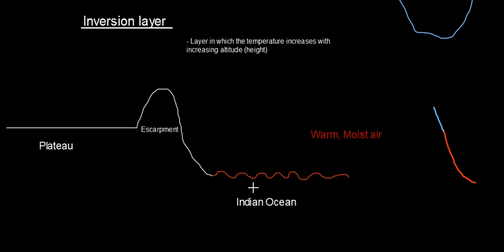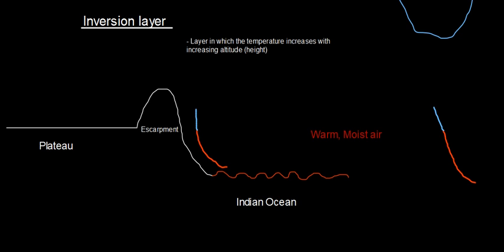On the eastern side of the country you find the Indian Ocean. When the Indian Ocean's waters evaporate, they produce warm moist air. Warm moist air tends to rise up because it is light and less dense. As this warm moist air rises up, it normally gets cooler and cooler — its temperature decreases as it rises.